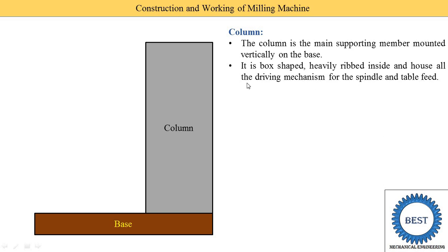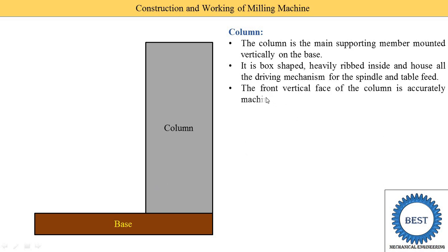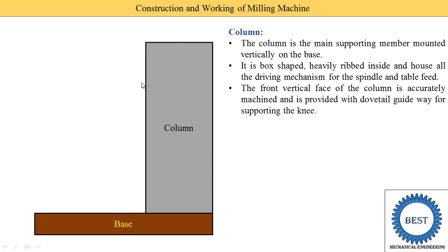The column houses all the driving mechanisms for the spindle and table feed. It is a hollow component — inside the top part of the column the spindle is installed with its driving mechanisms, and in the bottom part the table feed mechanism is also installed. The front vertical face of the column is accurately machined.